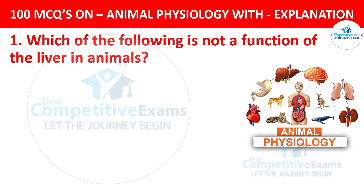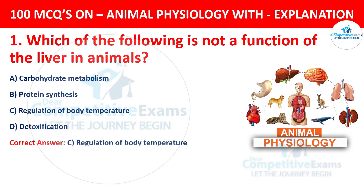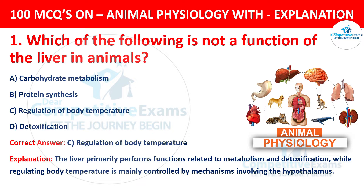Question number 1. Which of the following is not a function of the liver in animals? The options are: carbohydrate metabolism, protein synthesis, regulation of body temperature, or detoxification. The correct answer is C, regulation of body temperature. The liver primarily performs functions related to metabolism and detoxification, while regulating body temperature is mainly controlled by mechanisms involving the hypothalamus.